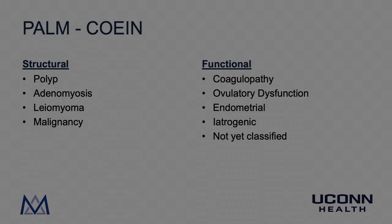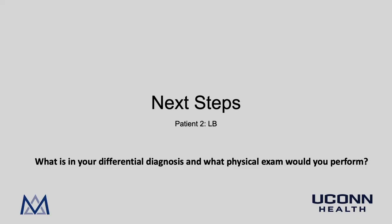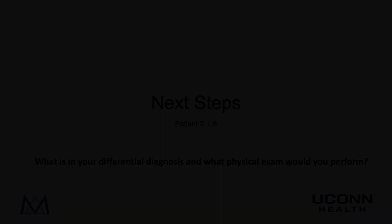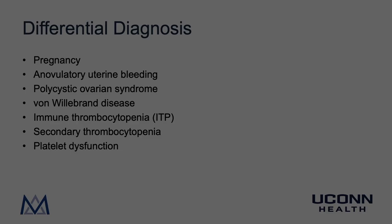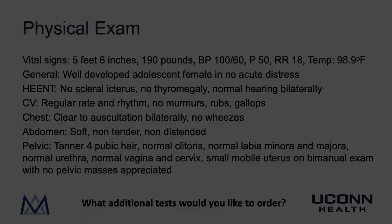That's a good review of PALM-COIN and the new standardized approach to abnormal uterine bleeding. Given LB's young age, the differential diagnosis for her abnormal uterine bleeding would include: pregnancy, anovulatory uterine bleeding, polycystic ovarian syndrome, von Willebrand disease, immune thrombocytopenia, other causes of secondary thrombocytopenia, and platelet dysfunction.